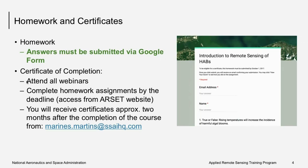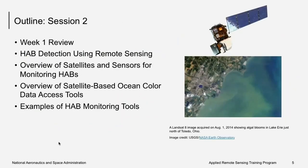There are two homeworks for this webinar series. The first will be available after today's session, and the second after session four. To get a certificate of completion, you should attend all webinars live and complete both homework assignments. Homework must be submitted via Google form — links are on the RCEP website. Certificates are processed and provided by Marinus Martins; if not received within two months after the series ends, you can send her an email.